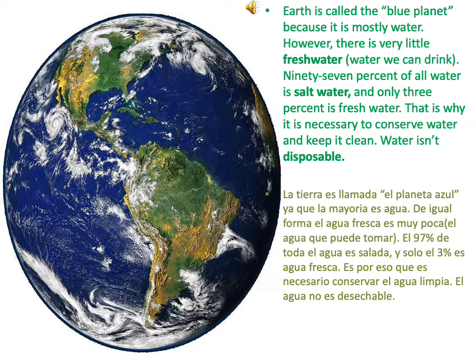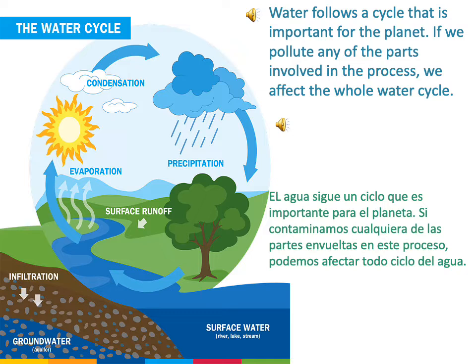Water isn't disposable. Water follows a cycle that is important for the planet. If we pollute any of the parts involved in the process, we affect the whole water cycle.